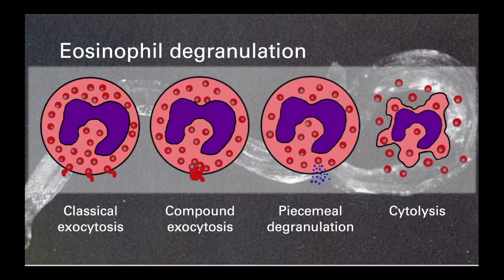Eosinophils, on the other hand, tend to release their granule content into the surrounding area, which when you consider their primary role in the defence against parasites, such as multicellular worms, makes sense, as these parasites are too big to be phagocytosed. They can release granules in four ways: classical exocytosis, compound exocytosis, piecemeal degranulation and cytolysis. They are important for maintaining homeostasis in a variety of tissues, including the intestines, uterus, lungs and thymus, as well as within adipose tissues.